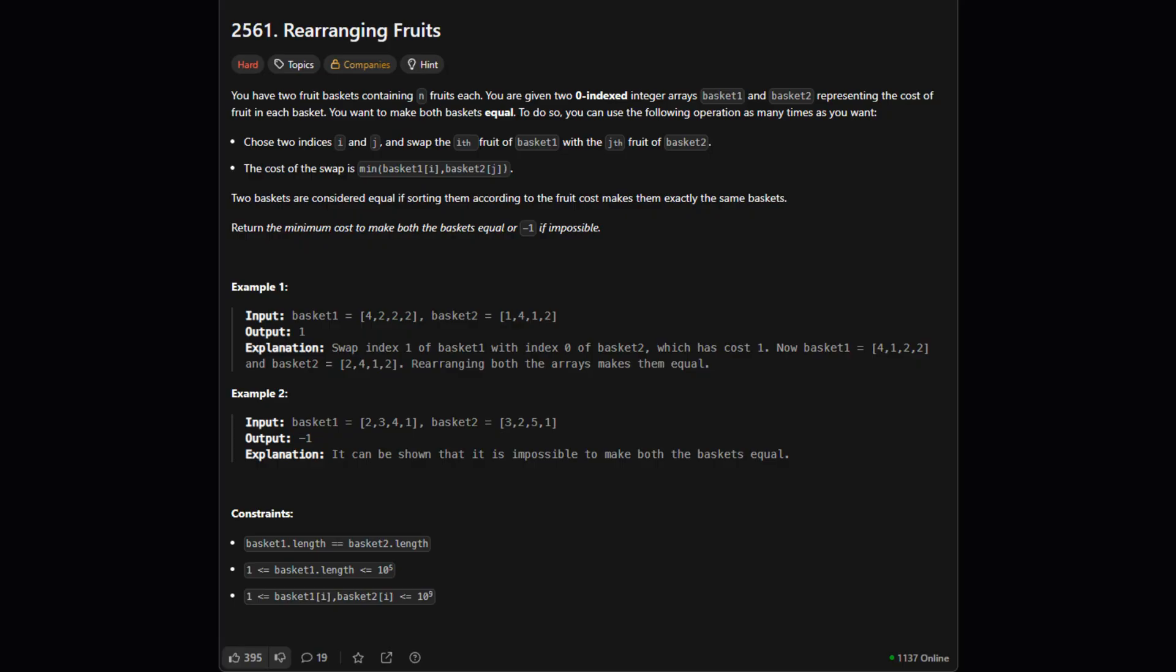Alright, so here's the setup. We're given two fruit baskets, represented by two lists of numbers. Each number is the cost of a fruit. The goal is to make the baskets equal. We can swap fruits between the baskets, and we want to do this with the minimum possible total cost. If it's impossible, we should return negative one.